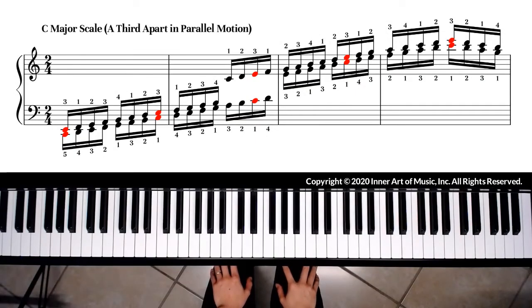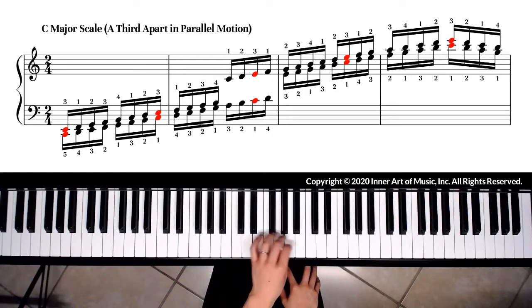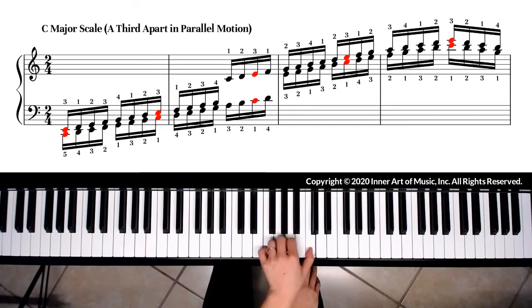The fingering for a third apart scale will follow the octave apart scale fingerings. The left hand fingering is 5, 4, 3, 2, 1, 3, 2, 1. We arrive on C with thumb.